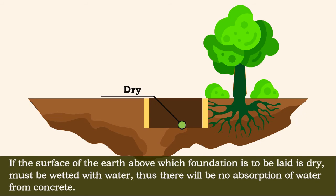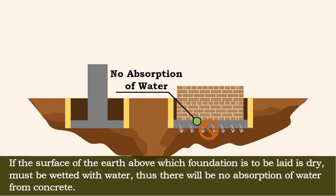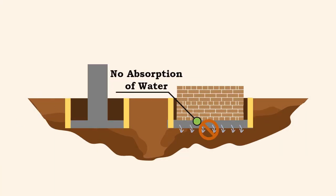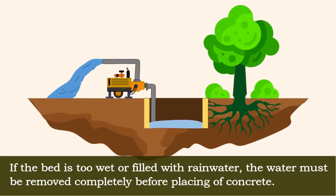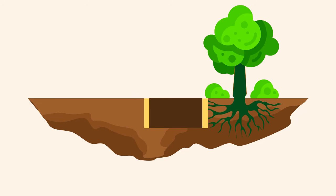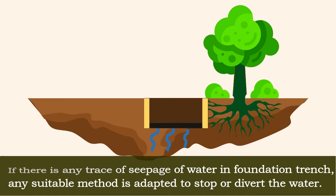If the surface of the earth above which the foundation is to be laid is dry, it must be wetted with water, so there will be no absorption of water from the concrete. Besides, if the bed is too wet or filled with rain water, the water must be removed completely before placing of concrete. If there is any trace of seepage of water in the foundation trench, a suitable method should be adapted to stop or divert the water.